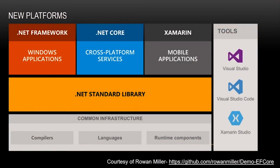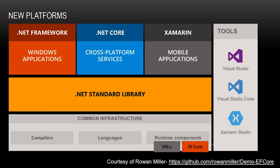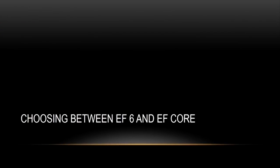No talk would be complete without the birthday cake architecture diagram. We've got the infrastructure libraries across the bottom, the .NET standard library in the middle, and then the different frameworks across the top and the tooling on the right. Entity Framework 6 is Windows only and only runs on the .NET Framework. Entity Framework Core runs everywhere - on Windows, .NET Core, and Xamarin.